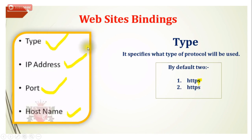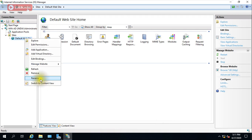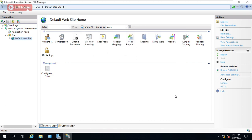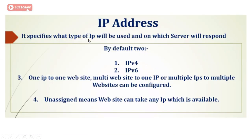The first binding option is type, which specifies what type of protocol will be used. It can be HTTP or HTTPS — these are also called protocols or standards. In my previous video I spoke about HTTP, HTTPS, and HTTP/2. If you look at the default website binding property here, you can see it is bound to HTTP. You can also see the host name, port, and IP address binding information.